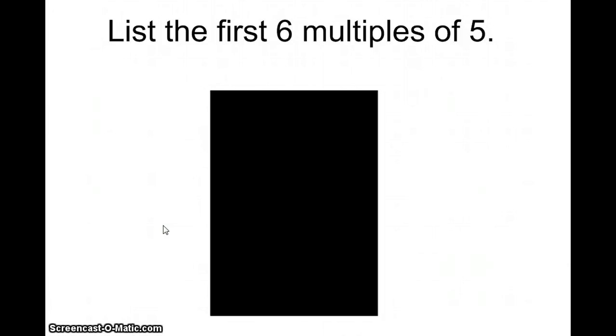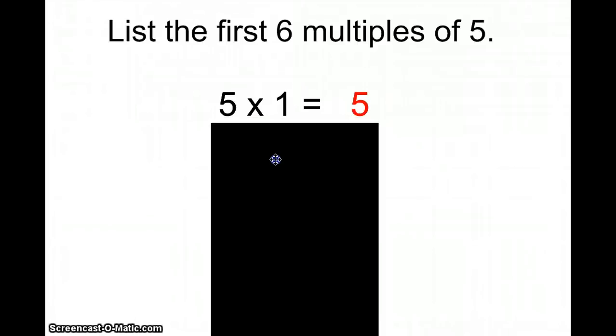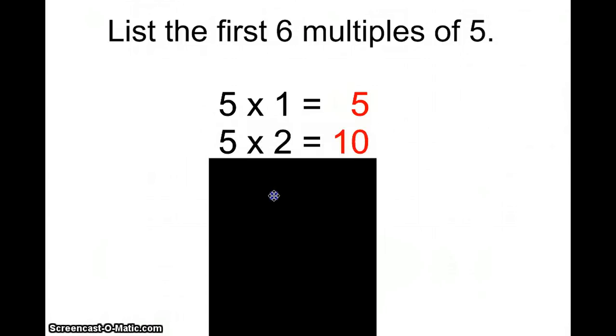What you would need to do is use your multiplication facts and go through the first six. First would be 5 times 1, which equals 5. So the red 5 in this example would be the first multiple of 5. The next multiple you get would be by doing 5 times 2, which gives you 10.